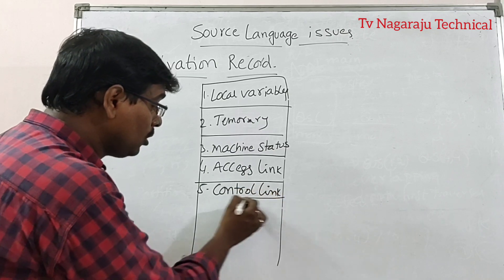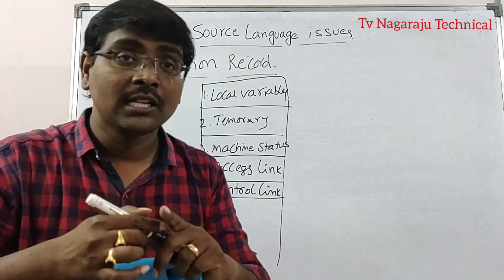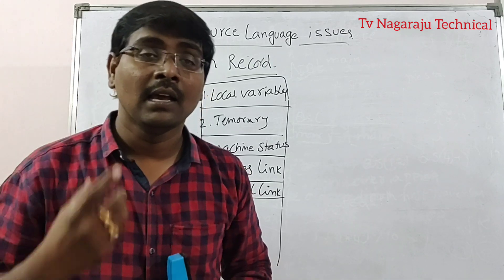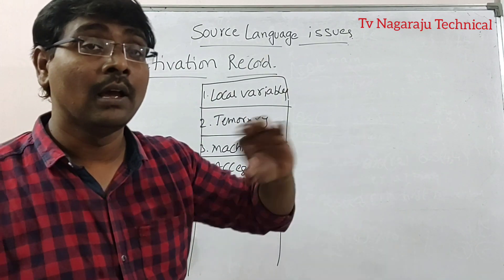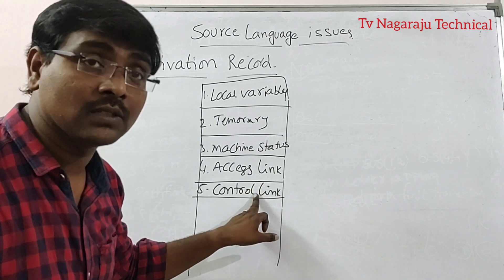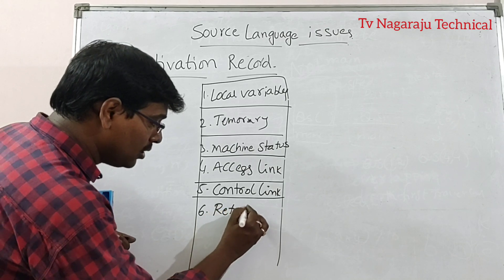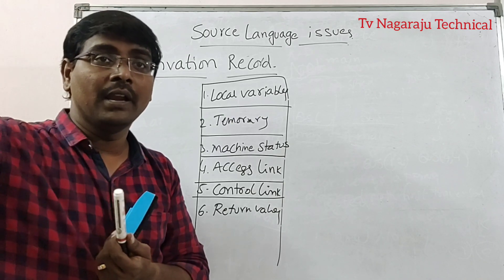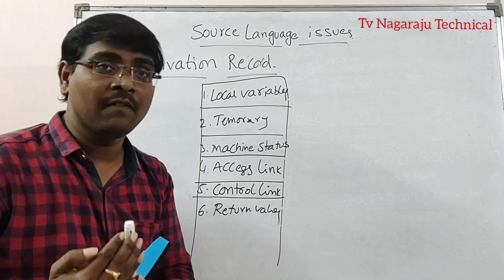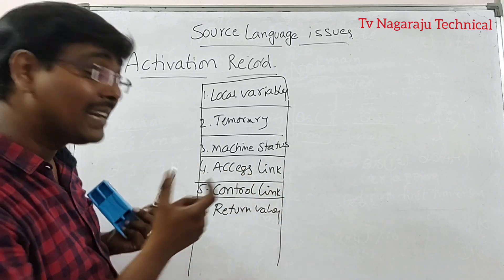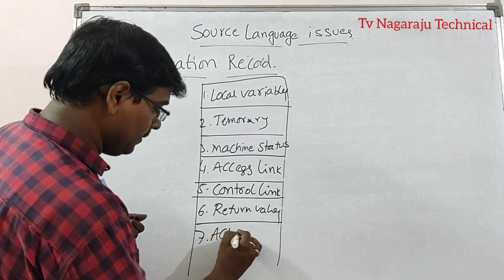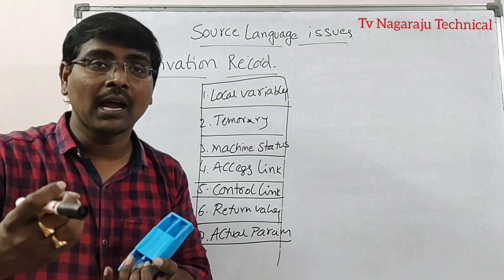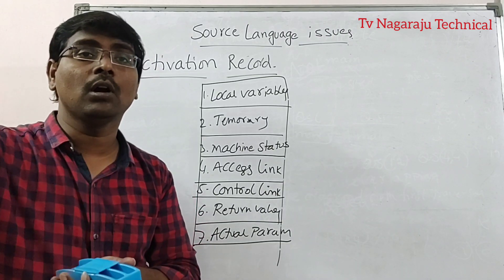Next is control link, which is also optional. The control link points to the caller — that is, the procedure which calls this one. Next are return values: whenever a procedure is called, after completion it returns some value, and those return values are stored here. Finally, actual parameters — the original parameters that are passed from the calling procedure to the called procedure.